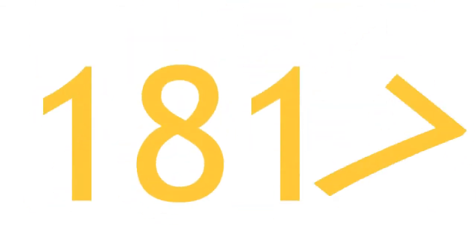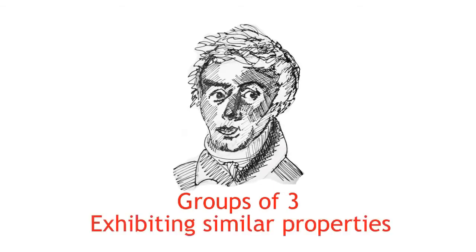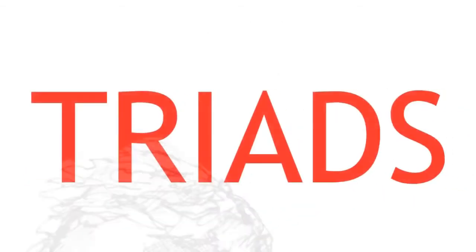In 1817, one of the first patterns amongst the known elements was observed. Johann Wolfgang Dobereiner noticed he could form groups of three with elements exhibiting similar properties. He termed these groups triads.